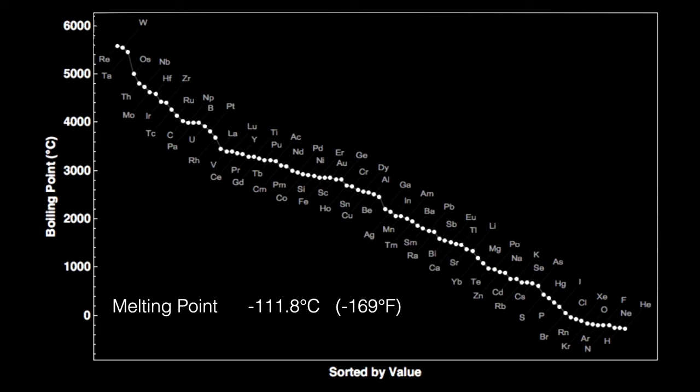Xenon has the ninth lowest boiling point at minus 108 degrees Celsius, minus 162 Fahrenheit. That's only 3.8 degrees above its melting point of 111.8, a very small difference between melting and boiling.